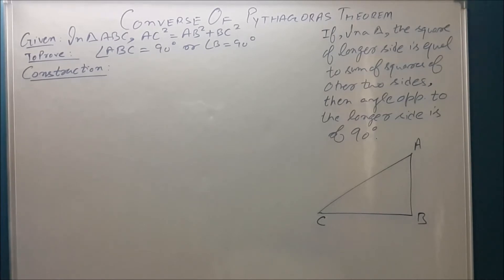If in a triangle the square of longer side is equal to sum of the squares of other two sides, then we have to show that the angle opposite to longer side is of 90 degrees.